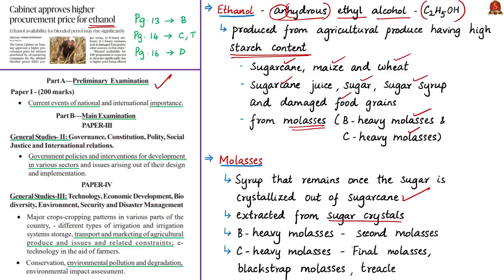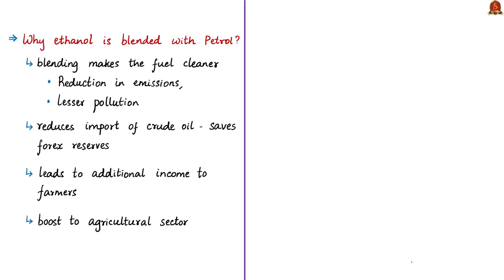Molasses is the syrup that remains once sugar is crystallized out of sugarcane. Based on the stage of extraction, molasses are graded — B-heavy molasses are also known as second molasses, while the finally extracted molasses are called C-molasses, final molasses, or black strap molasses. In some countries they are also called treacle. From this molasses, ethanol is produced and used for blending with petrol.